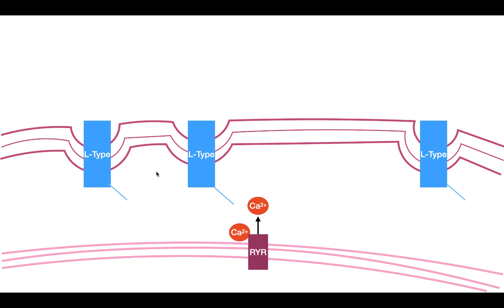The calcium concentration inside the sarcoplasmic reticulum is very high — in fact, this is the main storage container for calcium in the cell. Releasing calcium from the sarcoplasmic reticulum increases calcium concentration in the cytosol, which facilitates contraction. This method is called CICR, or calcium-induced calcium release, because the calcium that came in through the L-type channel opens the ryanodine receptor and allows more calcium to be released from the sarcoplasmic reticulum.